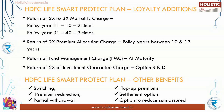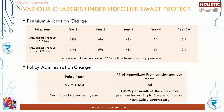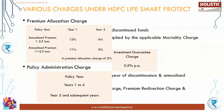HDFC Life Smart Protect also offers other benefits such as switching, premium redirection, partial withdrawal, top-up premiums, settlement option, and option to reduce the sum assured. Now let us look at the various charges. Premium allocation charge depends on the annualized premium — refer to the table. Policy administration charge: there are no charges for the first four years, and after that 0.32 percent per month of the annualized premium, increasing at five percent per annum on each policy anniversary.